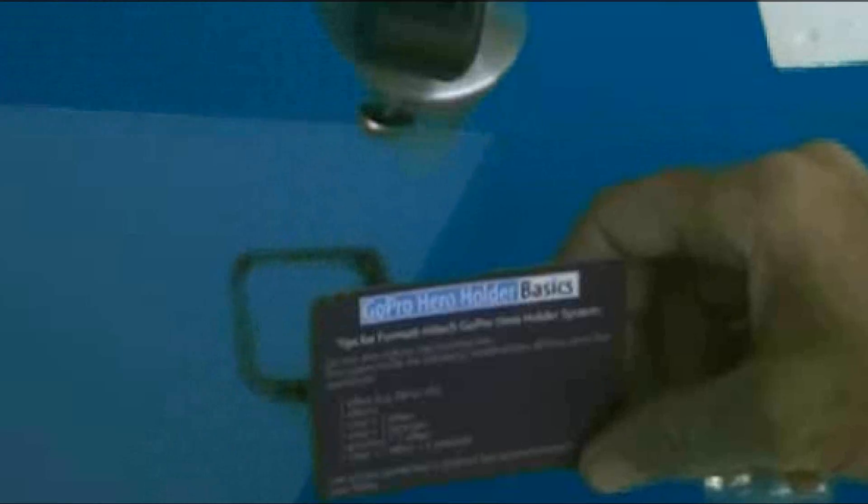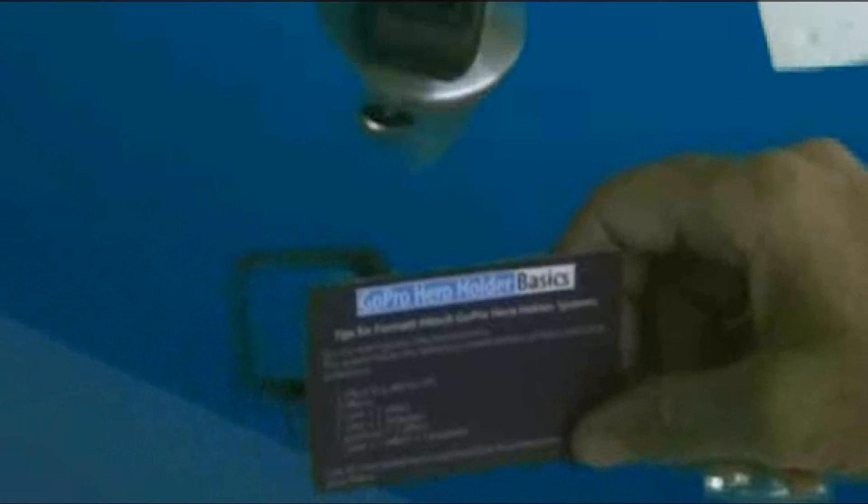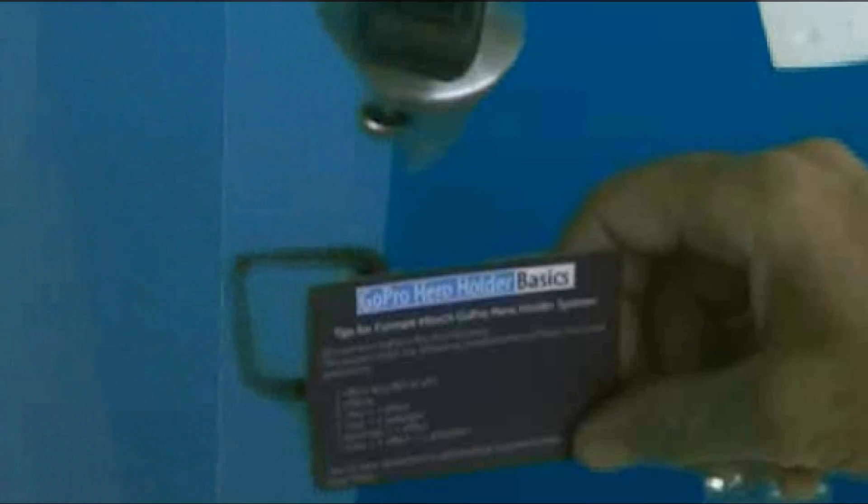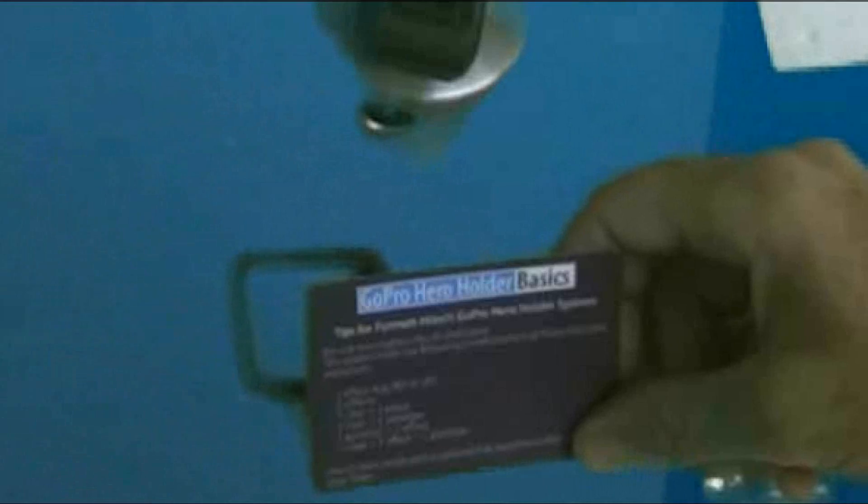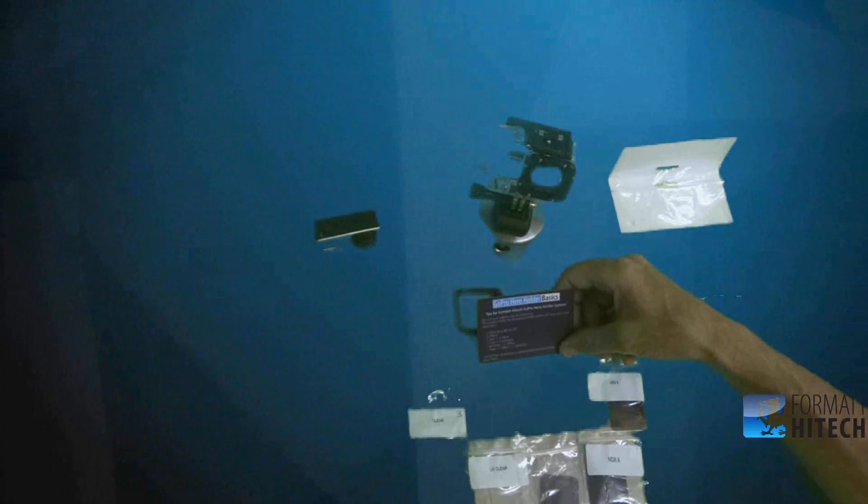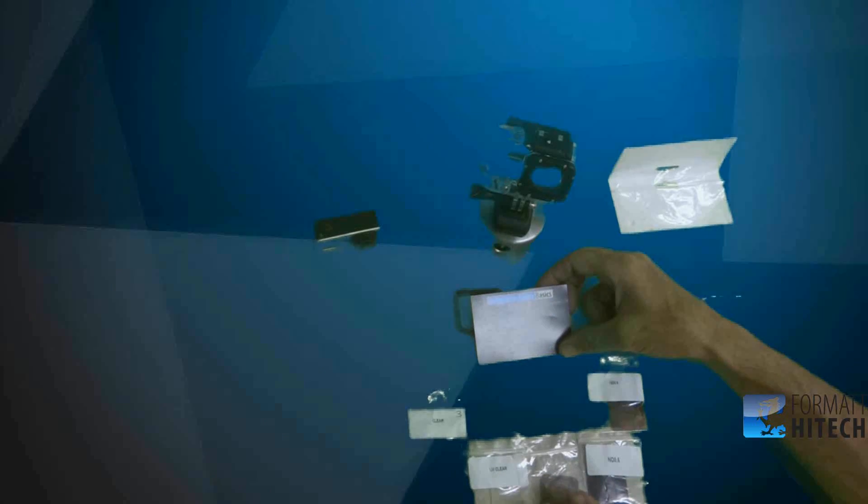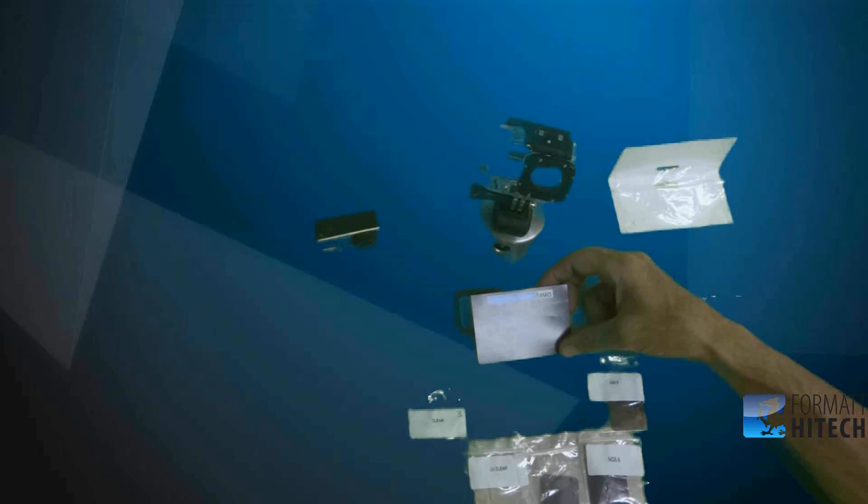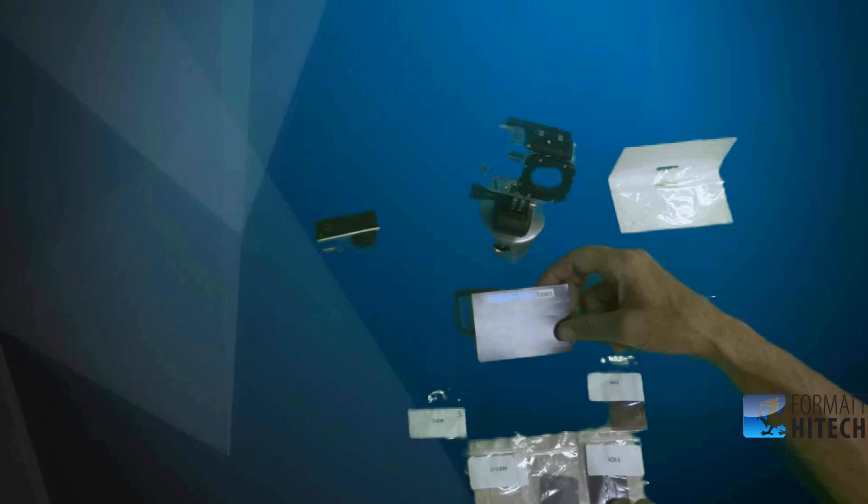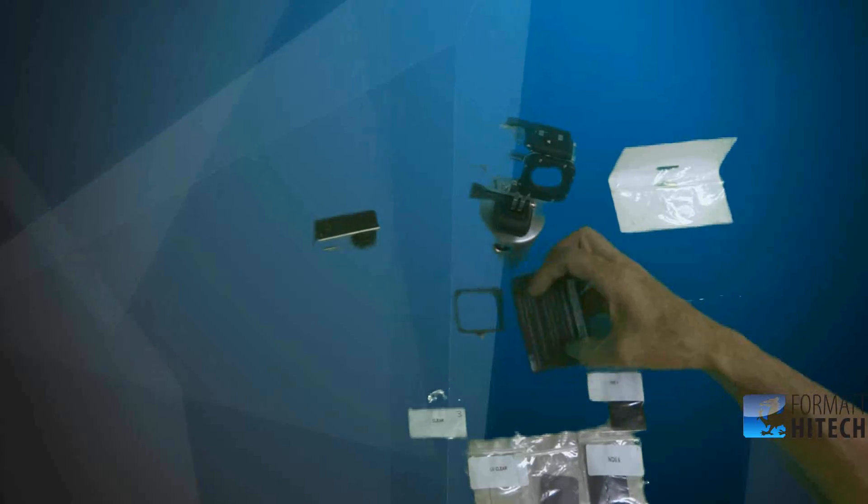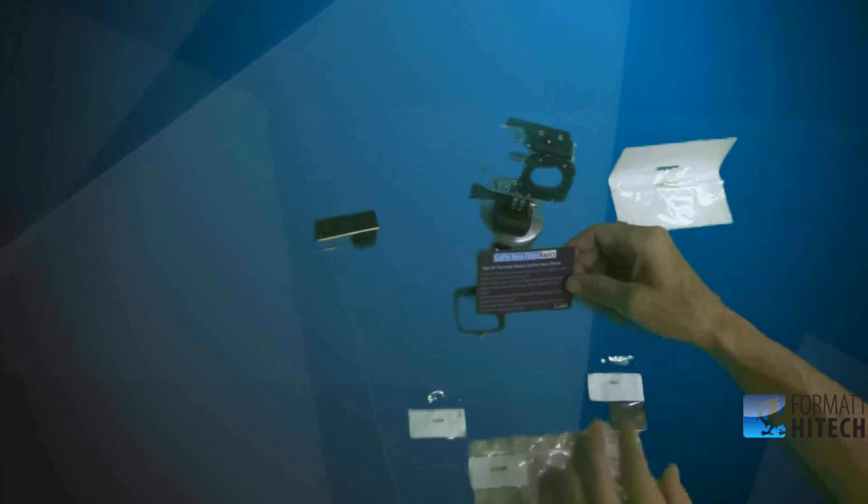On the card it says do not over-tighten the thumb screws. The system holds various combinations of filters and clear protectors. For example: one effect like ND or UV, two effects like one clear plus one effect, one clear plus one polarizer, one polarizer plus one effect. So you can mix and match any of these filters - you can even make the medium filter darker.